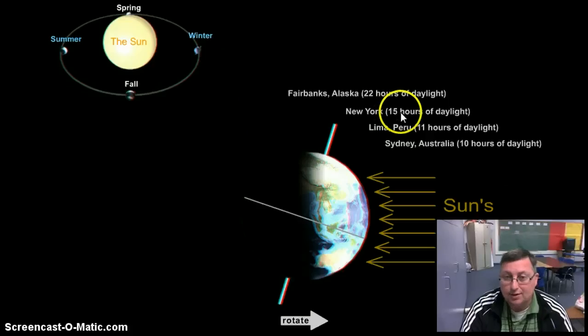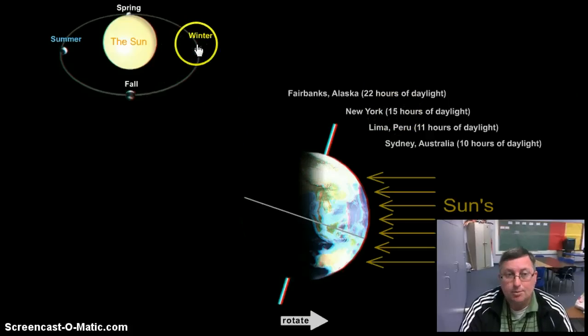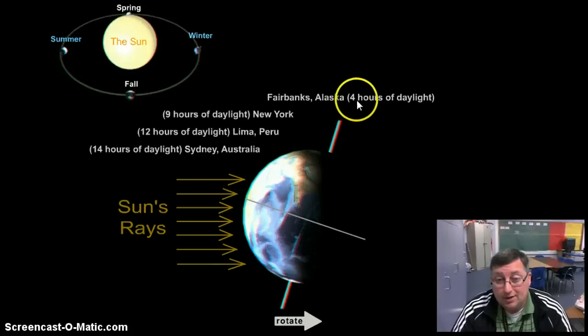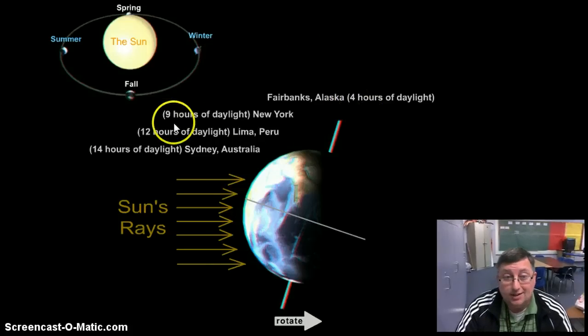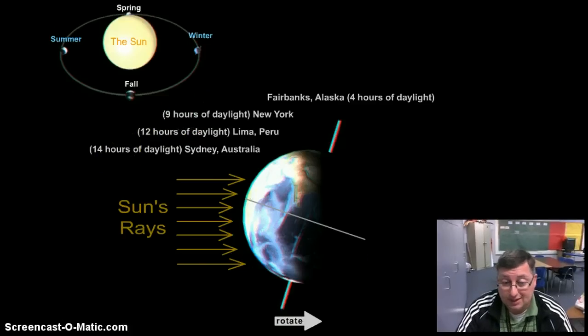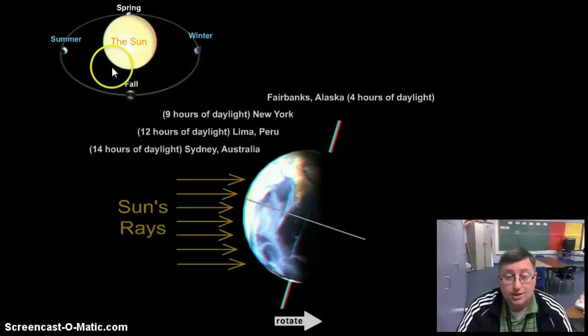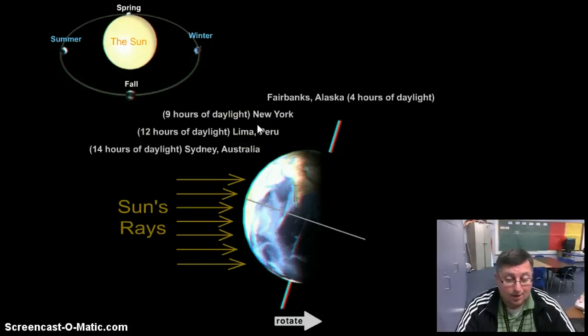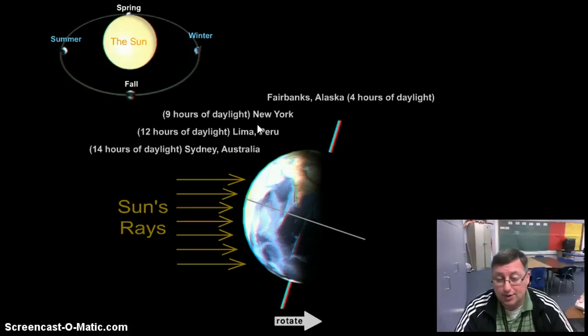New York, it's 15 hours. That's about the same for us. But in the winter time, if we go the other direction, in winter time Fairbanks only gets four hours of light. New York only nine hours. That's similar to us, but Sydney, Australia gets 14. So as you can see, just the tilt gives us different amounts of time for sunlight. And the more sunlight that we get, the more direct rays we get, the more our temperatures go up.